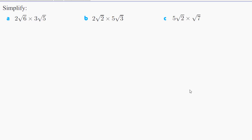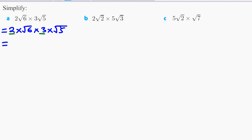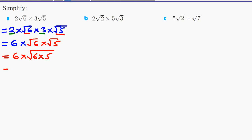Let's look at some more examples. The first thing we need to do here is to separate the question — to put the whole numbers together and the square roots separately. We can write this as 2 × √6 × 3 × √5. Now, 2 multiplied by 3 is 6. So our answer will be 6 multiplied by √6 × √5, which is 6 multiplied by √30. And you can just write that as 6√30.